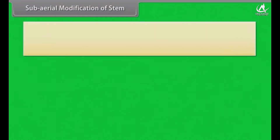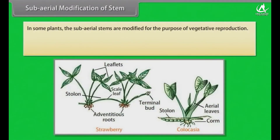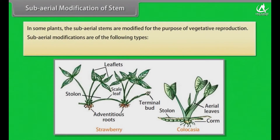In some plants, the sub-aerial stems are modified for the purpose of vegetative reproduction. Sub-aerial modifications are of the following types: runner, stolon, sucker, and offset.